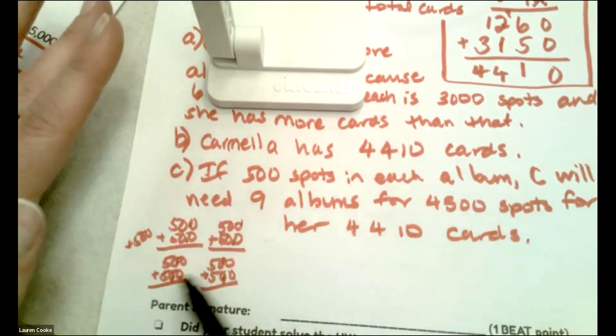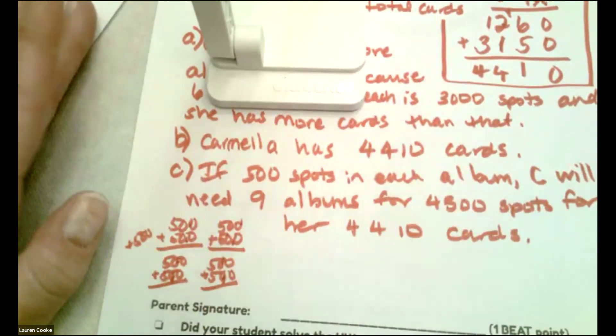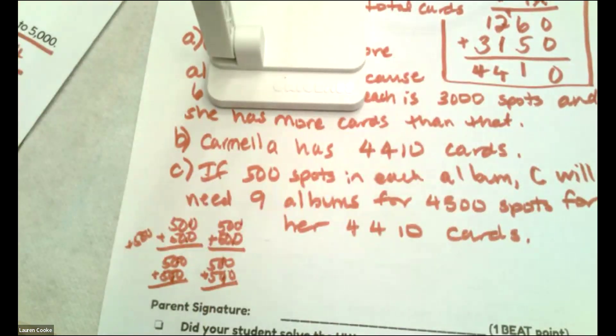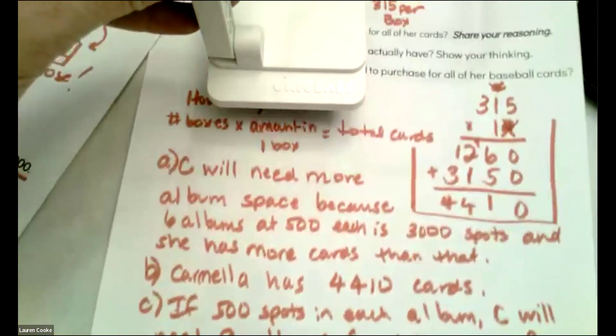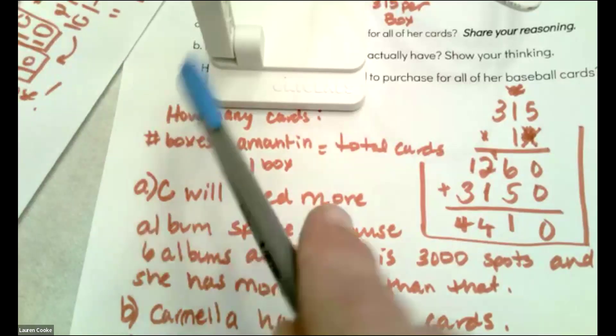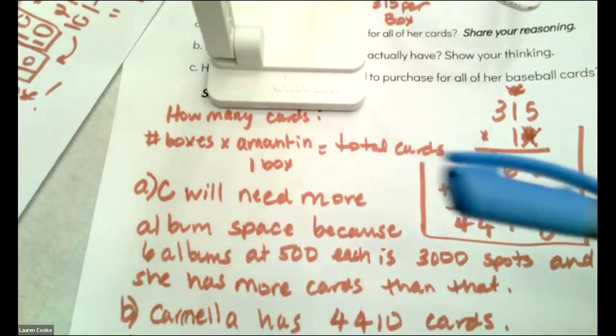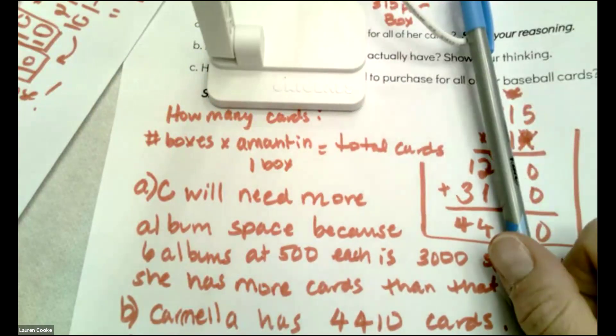She will need nine albums for 4,500 spots for her 4,410 cards. Okay. And because I have all of this reasoning here, and because I'm putting this sentence, if 500 spots in each album, you'll need nine albums and the number of spots it would be. That's all the thinking that you need to have. Okay. Let's not be intimidated by these problems. You can do it. The number of boxes, number of items times the amount per one equals the total. That just happens everywhere.